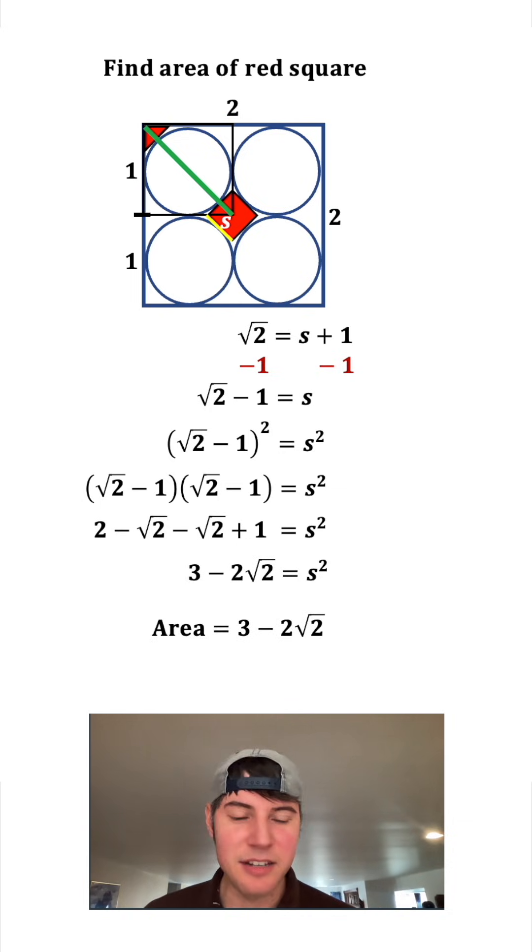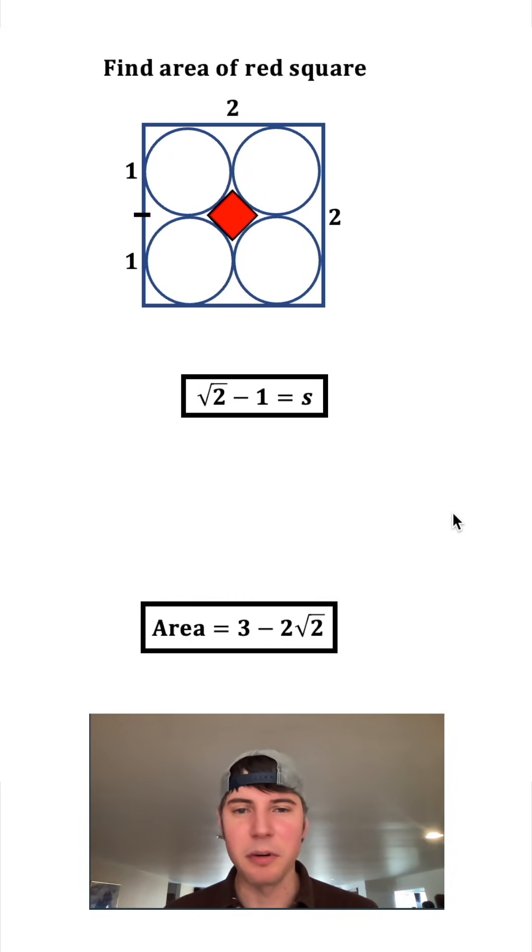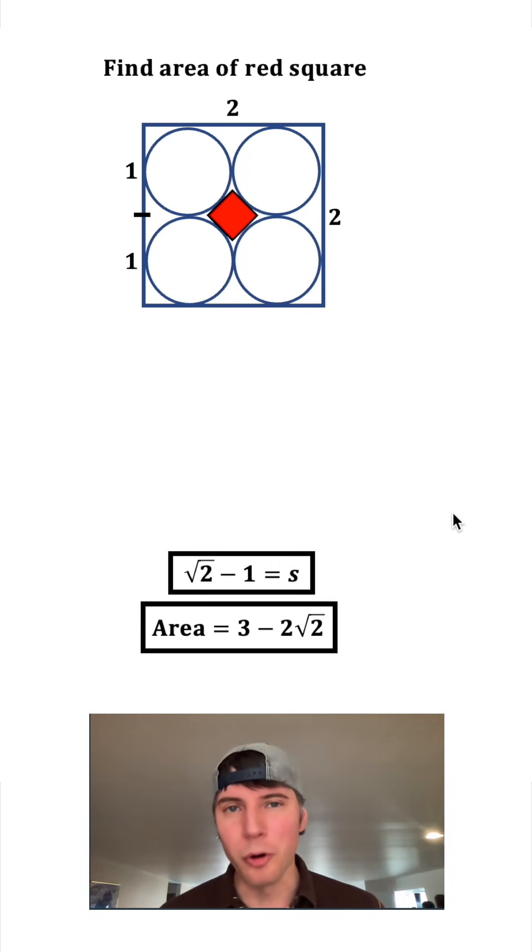Two plus one is equal to three, and negative root two minus root two is minus two root two. So this right here is the area of the red square. It's 3 minus 2√2. We can put a box around that, and let's put a box around s as well. That seemed pretty important. Get rid of all this other stuff, bring this down, and let's look at the other more formal way to solve it.